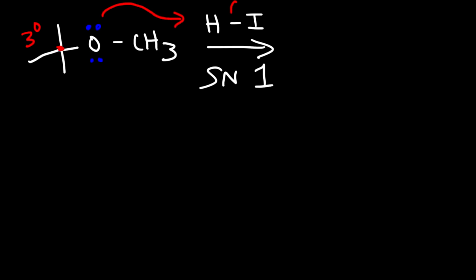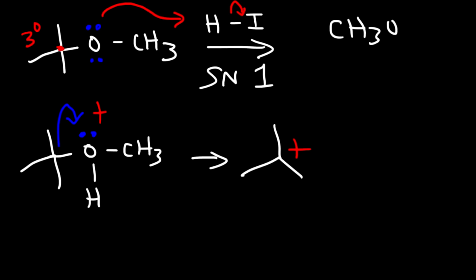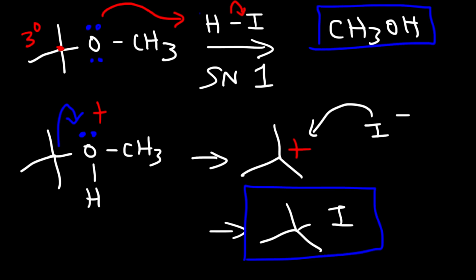The first step is protonation. The purpose of this is to make the oxygen a good leaving group. And then in the next step, the oxygen is going to leave. So we're going to get a tertiary carbocation intermediate. The first side product that we have is methanol. And then in the second step, iodide could come in giving us an alkyl halide. So these are the two products that we get in this reaction if we add one equivalent of HI.